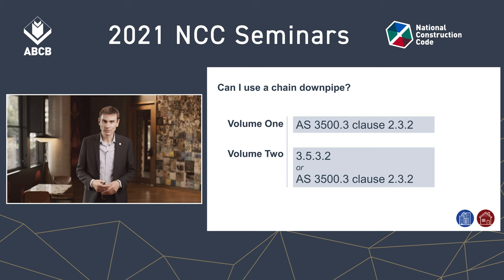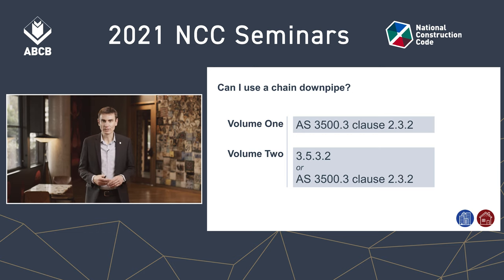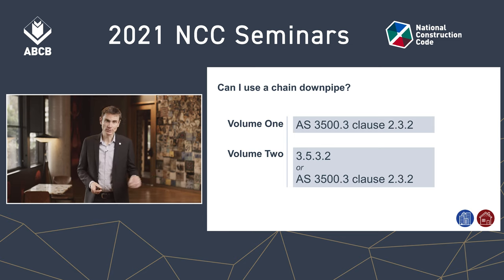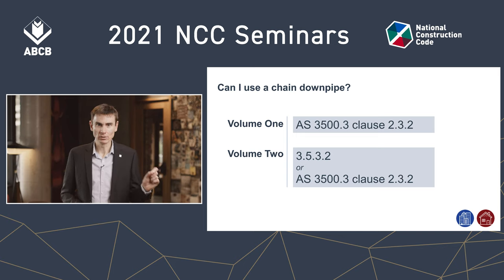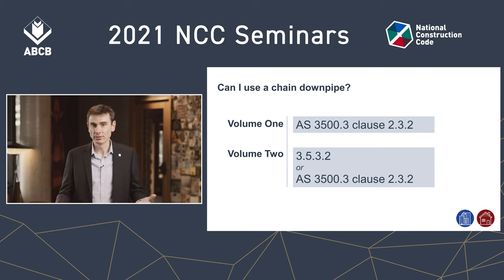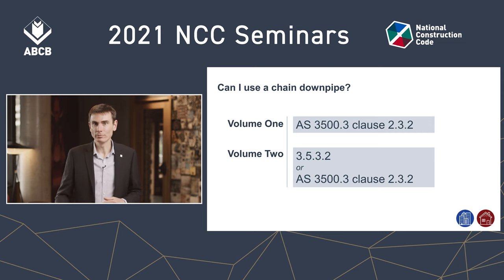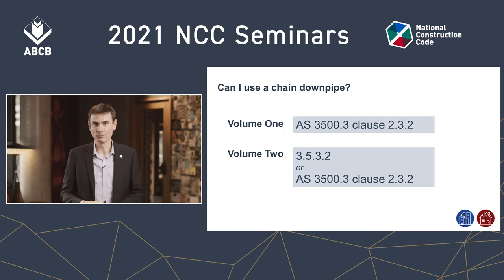I do provide a word of caution though. Volume One deemed-to-satisfy provisions send you straight to AS 3500.3, and that standard is also an option for Volume Two. In that standard, clause 2.3.2 sets out the deemed-to-satisfy downpipes — it's almost a whole page of products and materials that the standard permits for downpipes, and chains aren't one of them.